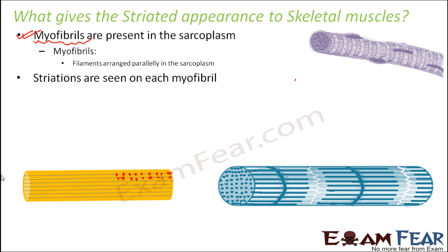This is how a myofibril actually looks. Some portion is light, then dark, then light, then dark, and so on — alternate light and dark regions are present inside the myofibril. The question is: what makes these striations present on each myofibril? What is there in the myofibril because of which there are alternate dark and light bands?